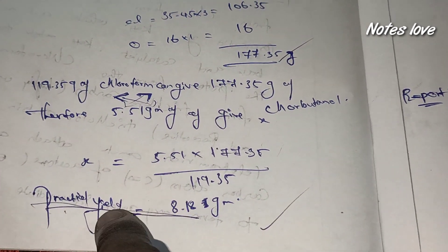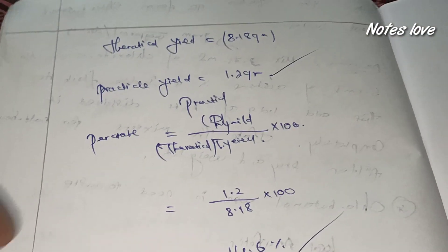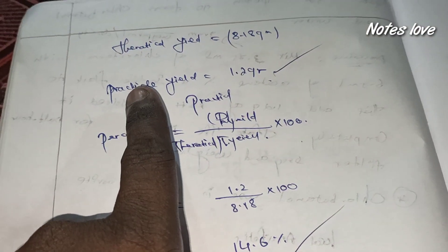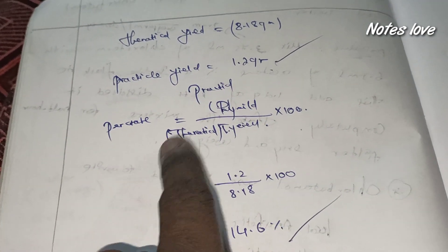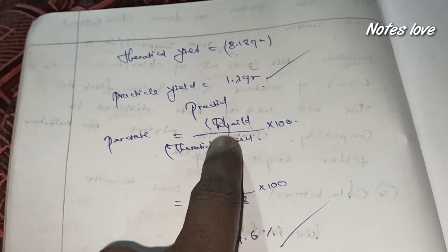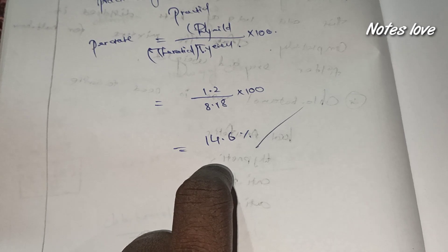I got theoretical yield 8.81. Practical yield is 1.2. This is the formula of percentage yield calculation: practically by theoretically into 100. I got 14 percentage only. I'm not done well, I got a less percentage.